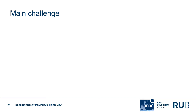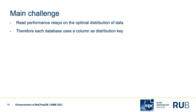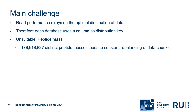Besides the changes in the code base of MacPeptiDB, the main challenge lies in the optimal distribution of data so the load is evenly distributed across each server. The database uses one of the table columns as the distribution key, which has to be chosen by the developer. An example of an unsuitable distribution key is the peptide mass. With around 178 million distinct masses, this key is so diverse that Cetus will rebalance chunks continuously during the database build. This slows the build massively — it ends up needing more than 30 days, while the current build on the original server takes only 11 to 12 days.